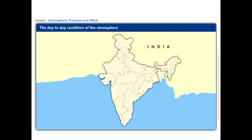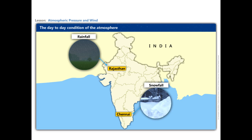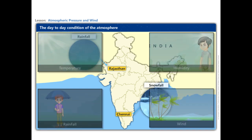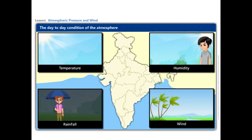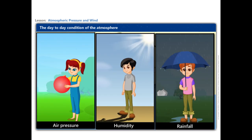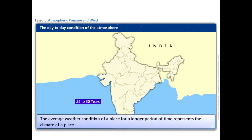We never experience snowfall in Chennai. We never experience high rainfall in the Rajasthan Desert. We have a pattern of weather condition for a particular area that is more or less the same all the years. The elements of weather — temperature, air pressure, humidity, rainfall, wind speed — vary from place to place. The average weather condition of a place over a longer period of time represents the climate of that place.